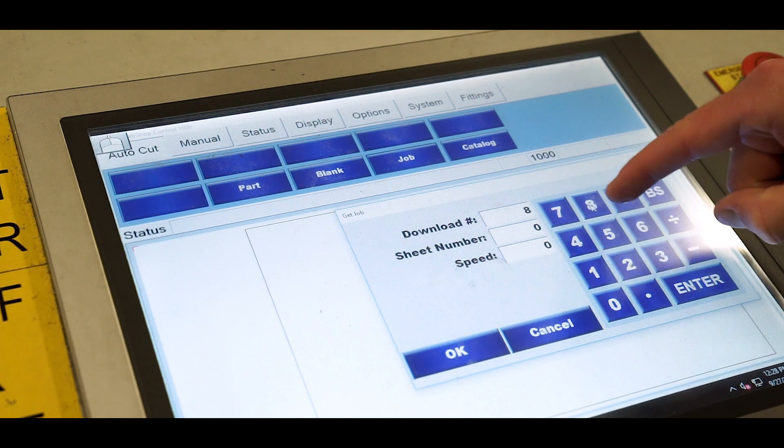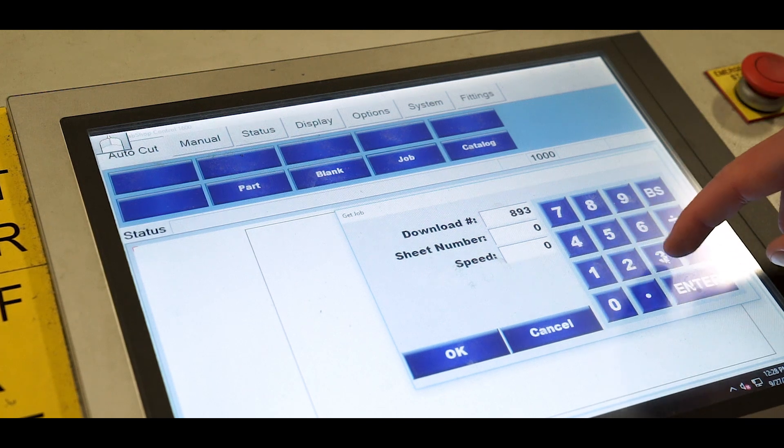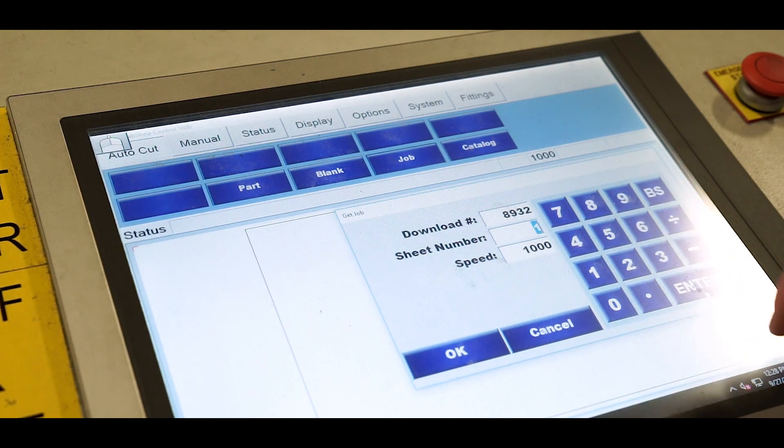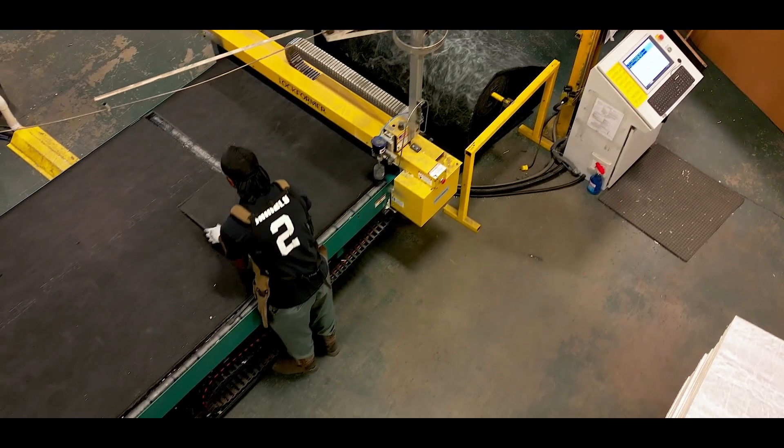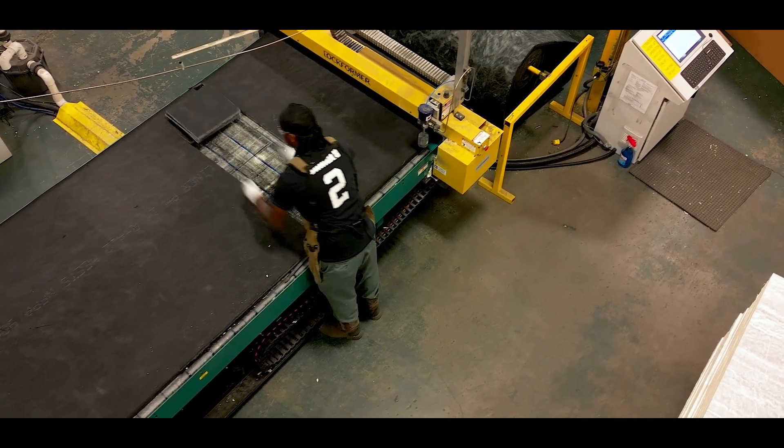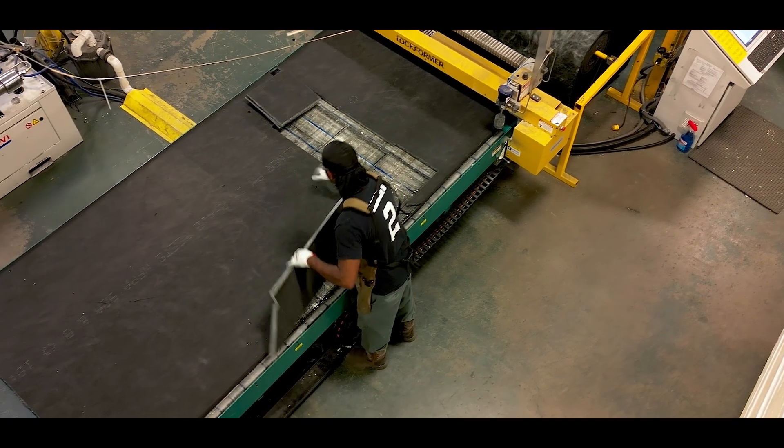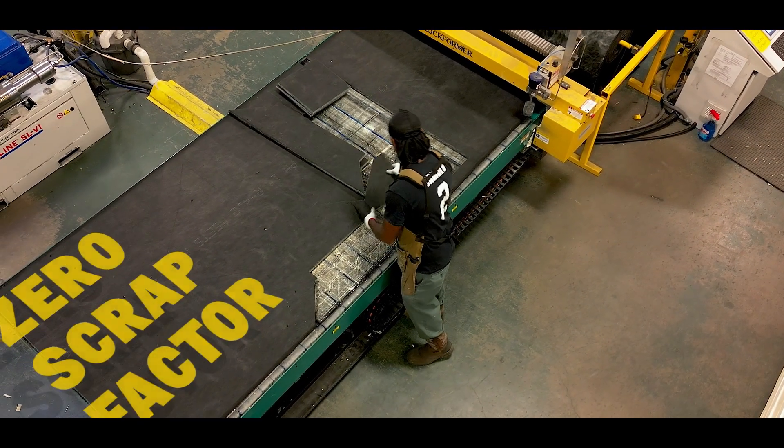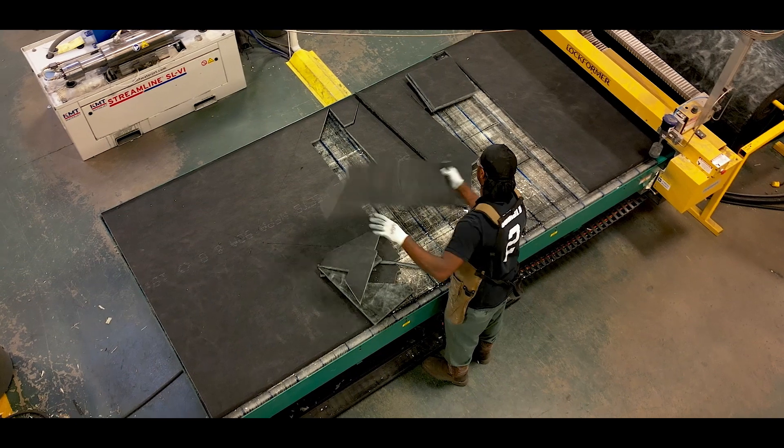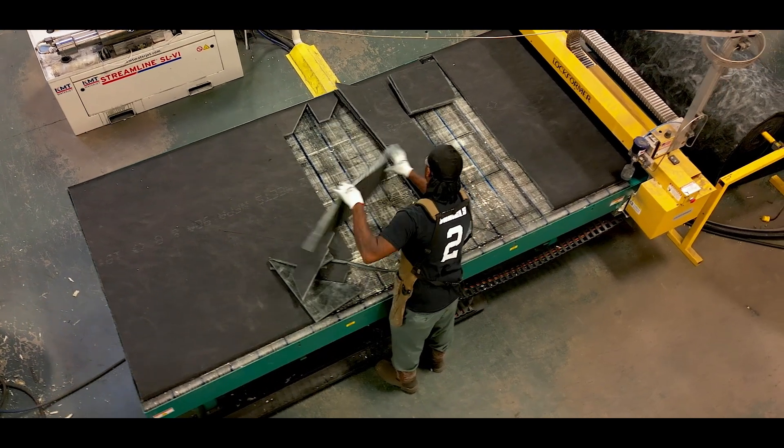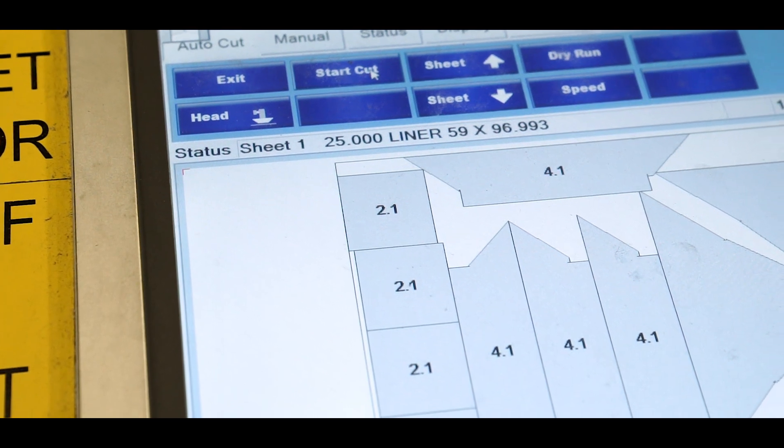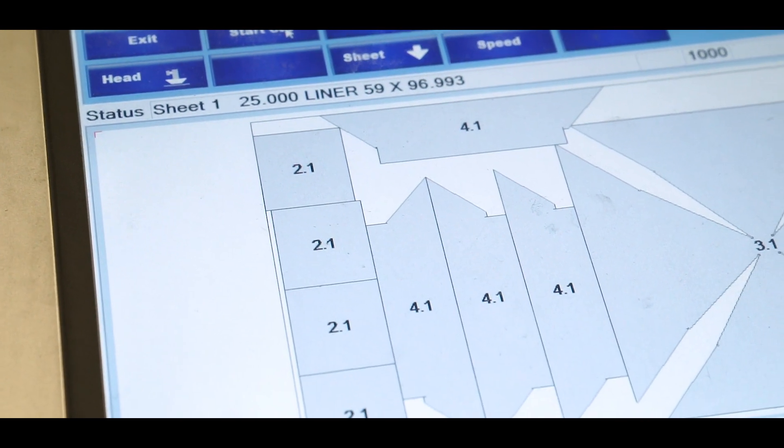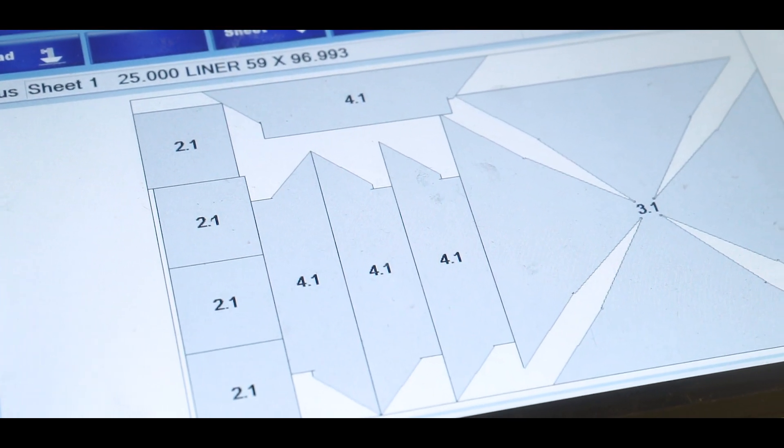The software optimizes the cut pattern to maximize the pieces that can be cut from a single sheet of insulation. And, unlike laser or plasma, the precision of the Waterjet can cut right to the edge of a previous cut, for a zero scrap factor. That's zero waste from part to part. The software also streamlines your fittings operation by matching the cut insulation to the corresponding metal blanks.